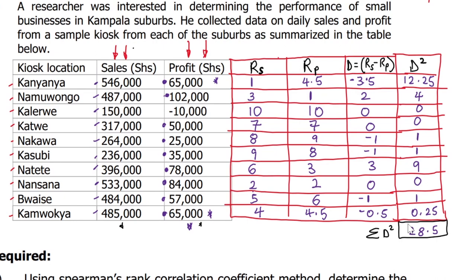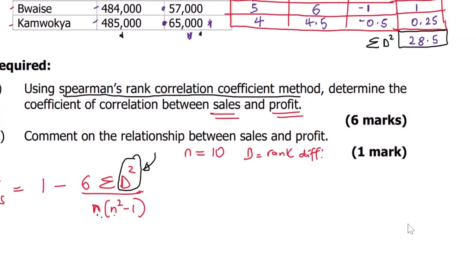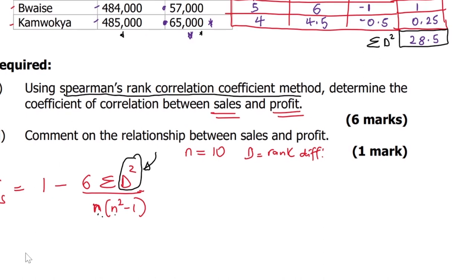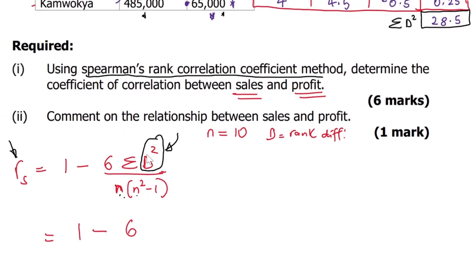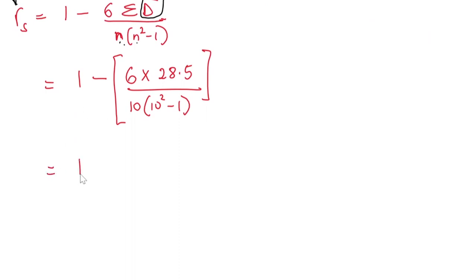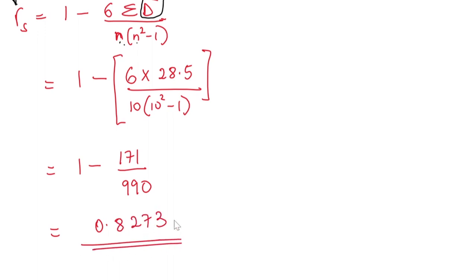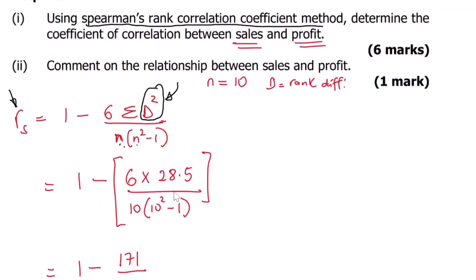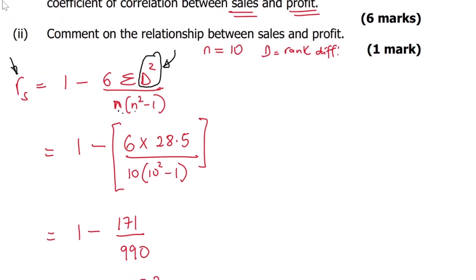Squaring the d values: 12.25, 4, 0, 0, 1, 1, 9, 0, 1, 0.25. Summing these gives Σd² = 28.5. Substituting into the formula: r = 1 - (6 × 28.5) / (10 × (100 - 1)) = 1 - 171/990 = 0.8273. So our Spearman's rank correlation coefficient is 0.8273.